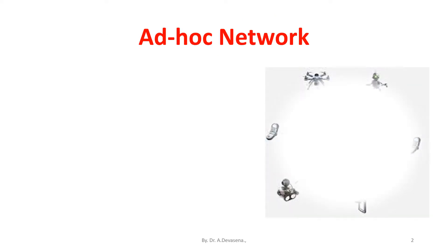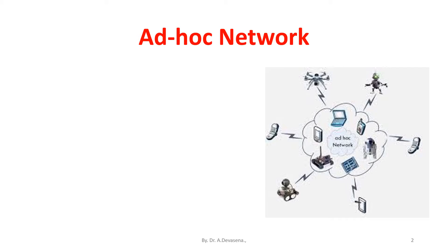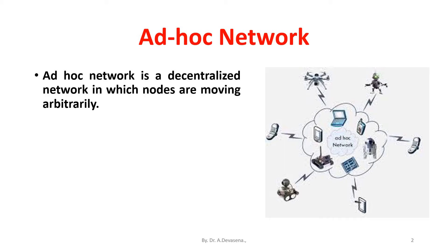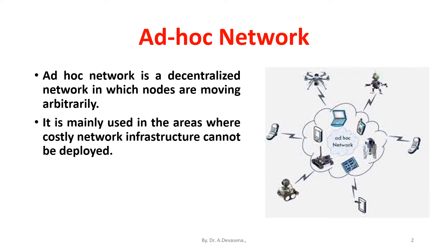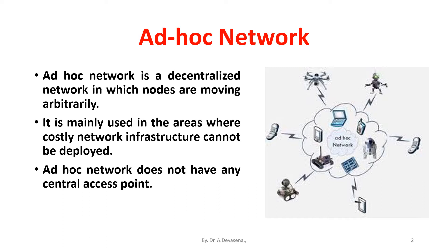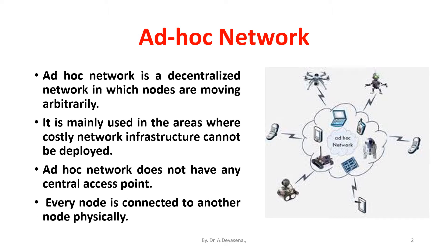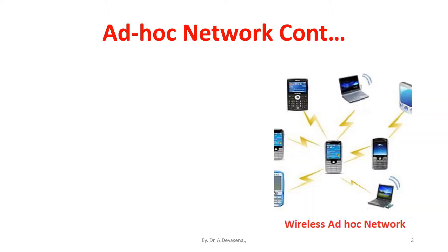Ad Hoc network representation is shown here. Ad Hoc network is a decentralized network in which nodes are moving arbitrarily. It is mainly used in the areas where costly network infrastructure cannot be deployed. Ad Hoc network does not have any central access point. Every node is connected to another node physically. It is a temporary network setup, generally for emergency purposes.